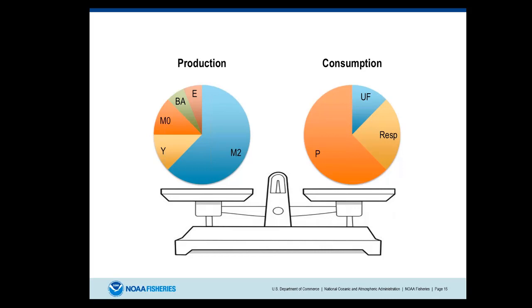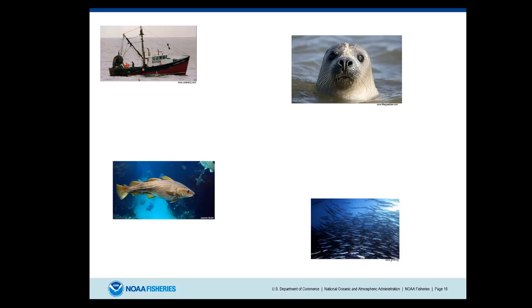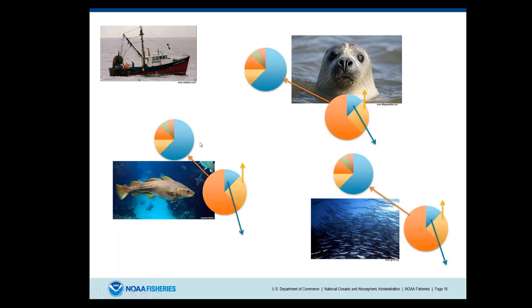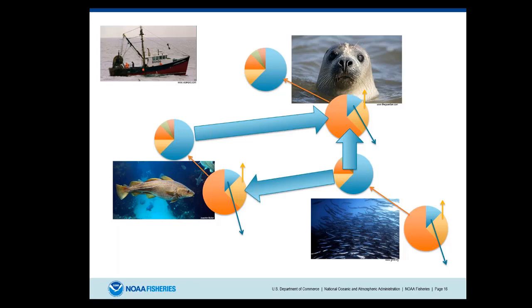Here's a really simple food web: an overly simplistic system with a forage fish, a piscivore, a marine mammal, and a fisherman. Each one is going to consume stuff — a portion drops off to detritus as unassimilated food, and respiration just burns off. The rest goes into production. The way you balance the whole system is that this production wheel supplies the consumption for these predators, and ultimately some production is lost to the fishery. You can see how you can build this out and make it quite complex, but in the end it's just solving a series of linear equations.